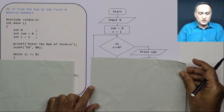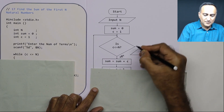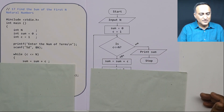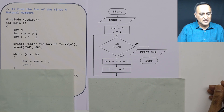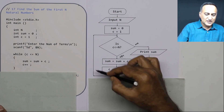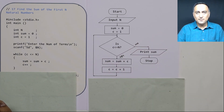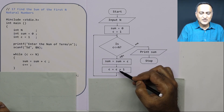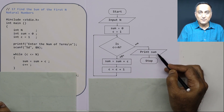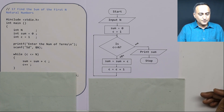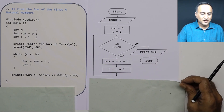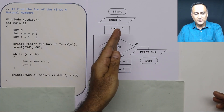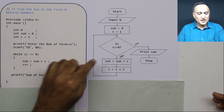While c is less than or equal to n, if yes, I say sum = sum + c, and I increase count by 1. This process repeats until c exceeds n by 1. Suppose n is 5 — c will be 1, 2, 3, 4, 5, and when c becomes 6, the condition is false and I print the sum. The sum of 1 to 5 is 15. There is a one-to-one matching between every step in the flowchart and the program.